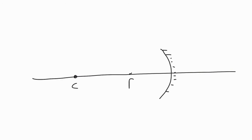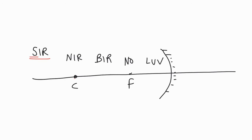Now for the characteristics of these types of images, there's a quick saying to help us remember. For a concave mirror that focuses light to a point: anything outside the center of curvature will be smaller, inverted, and a real image. Anything at the center of curvature is normal size, inverted, and real. Anything between C and F will be bigger, inverted, and real. Anything at the focal point will not form an image. Anything inside the focal point will be larger, upright, and virtual.